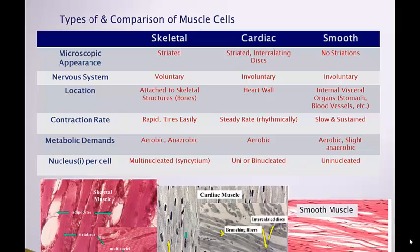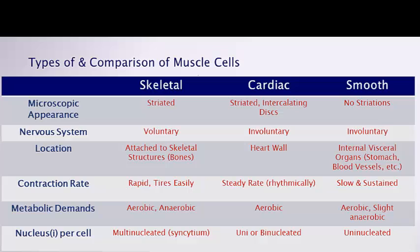Each muscle type has unique features. Skeletal muscle is always associated with bones. Cardiac muscle is found in the heart wall and makes up the vast majority of the heart's mass — the only non-cardiac tissue there is the fibroskeleton. Smooth muscle is found everywhere else movement is needed, such as the digestive system, where it rhythmically milks contents through.